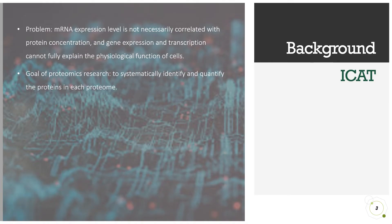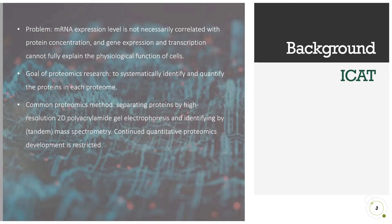This is where proteomics research came into being. The main goal of proteomics research is to systematically identify and quantify the proteins in a given proteome. The most commonly used method was to separate proteins by high-resolution two-dimensional polyacrylamide gel electrophoresis, then use mass spectrometry or tandem mass spectrometry to identify protein spots. However, due to shortcomings such as detecting only certain types of proteins and difficulty detecting low-abundance proteins, the development of quantitative proteomics has been limited, and new methods are urgently needed.